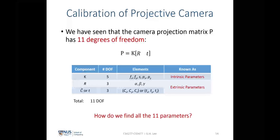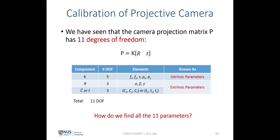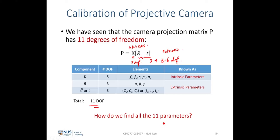Let's revisit the projective camera projection matrix. There are altogether 11 degrees of freedom in the camera projection matrix: K with 5 degrees of freedom from the intrinsics, and another 3 plus 3 equals 6 degrees of freedom from the extrinsics. The million dollar question is: since we have 11 unknowns constituting this camera projection matrix, how can we find all 11 parameters?